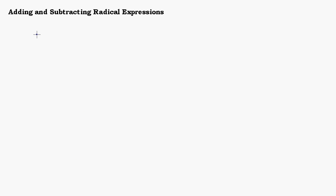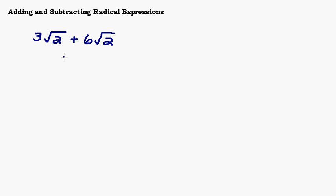Let's start off with a pretty straightforward problem. Let's say we have 3 square root 2 plus 6 square root 2. What would be your guess as to what the answer would be? 3 square roots of 2 plus 6 square roots of 2 — it seems logical that the answer would be 9 square roots of 2.